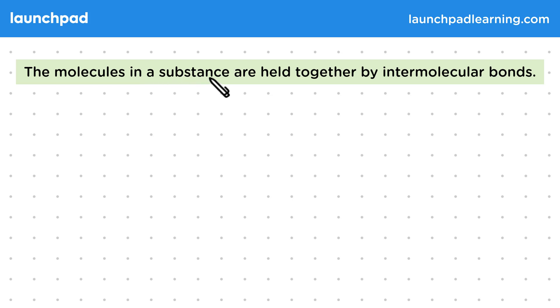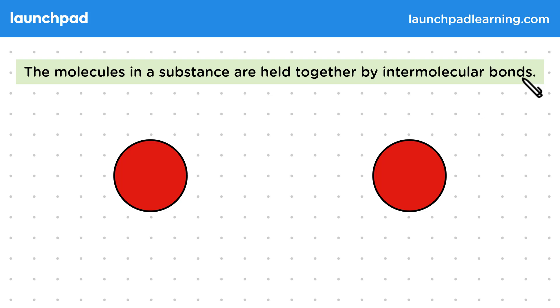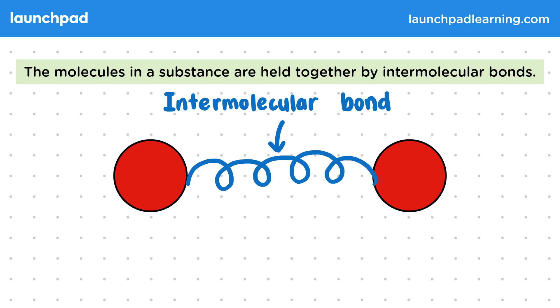The molecules in a substance are held together by intermolecular bonds. We can imagine these molecules as balls of matter, which are held together by springs. These springs model the intermolecular bonds between the molecules. They stop the molecules from moving freely and help the substance keep its structure. These bonds have potential energy stored in them.